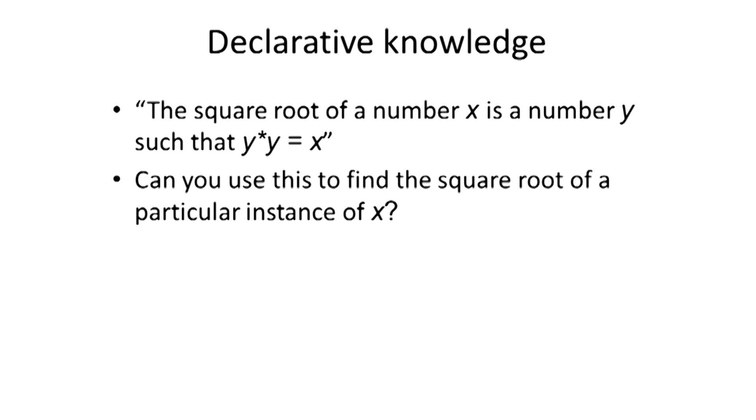Let's look at an example. What do we mean by declarative knowledge? Here's a piece of declarative knowledge. That first statement says the square root of a number x is a number y such that y times y equals x. You know that's true from high school algebra. It's a statement of truth. It tells us something about how to decide whether a particular number is a square root or not. But can we use this to actually find the square root? And the answer is no.